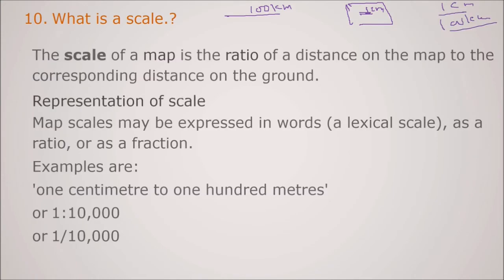So scale of a map is the ratio of distance on the map to the corresponding distance on the ground. In the representation scale maps can be expressed in words, say a lexical scale as a ratio or as a fraction. So examples are you can lexically write as 1 cm to 100 m like this. 1 is to 10,000 also. These are other ways 1 by 10,000. This is the most used scale representation.